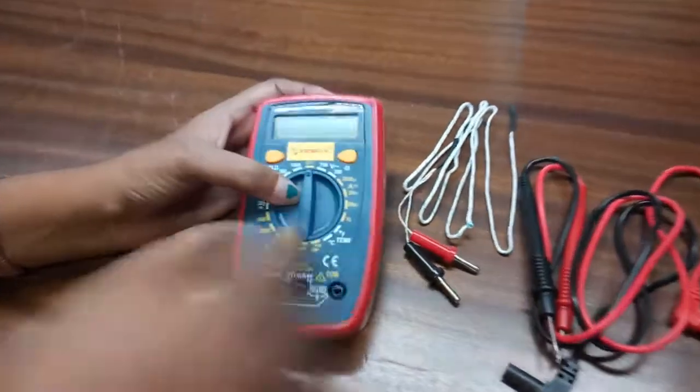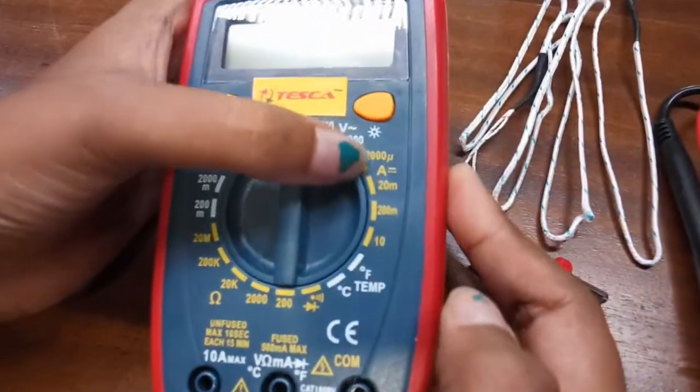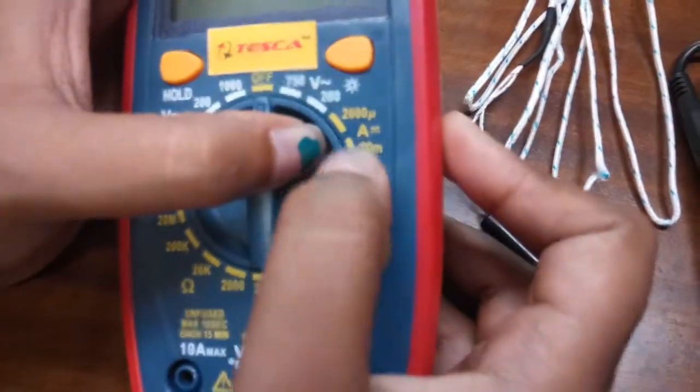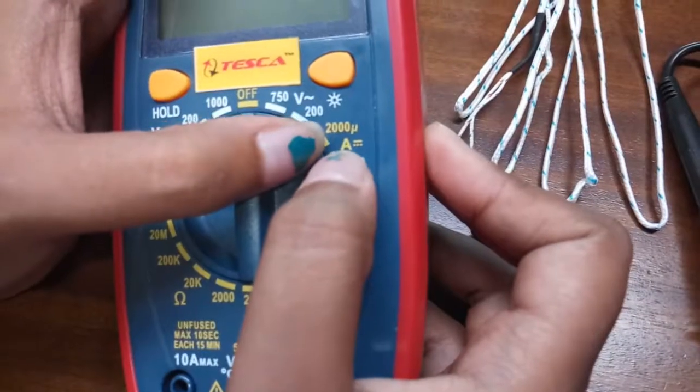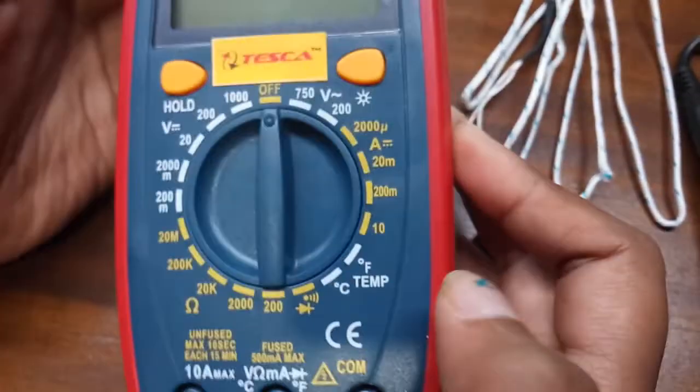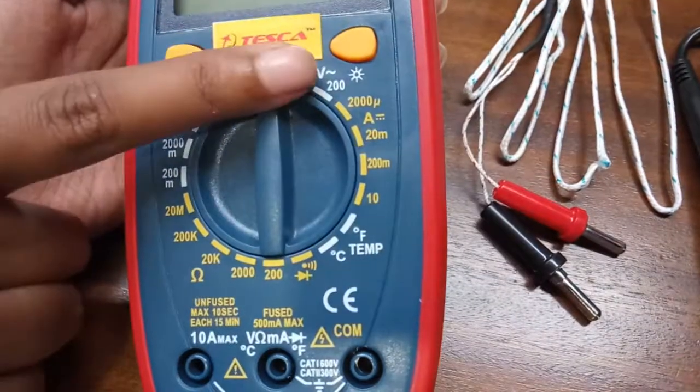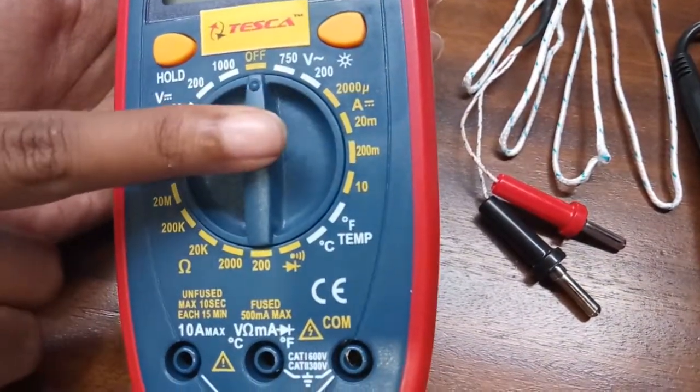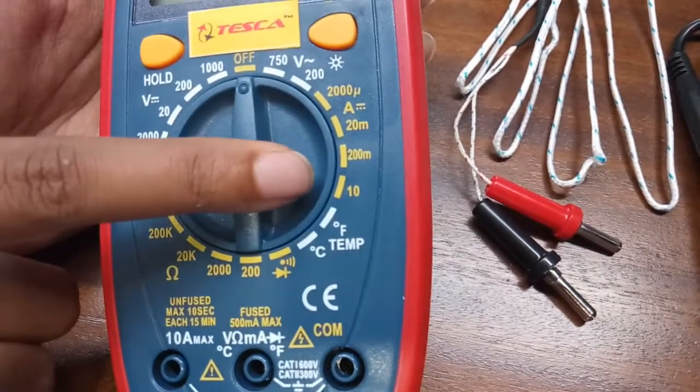Now this here is the DC current. This is denoted by the ampere A and the straight line for DC. This is DC current. So the range is 0 to 2000 micro ampere, 0 to 20 milliampere, 0 to 200 milliampere and this is 10 ampere.